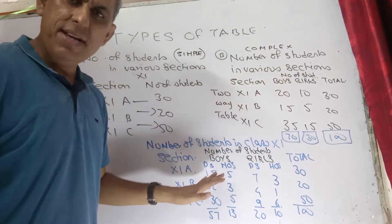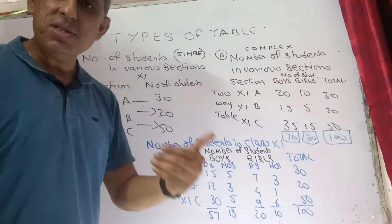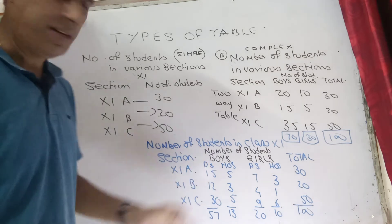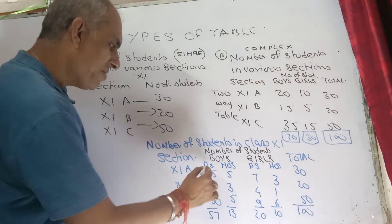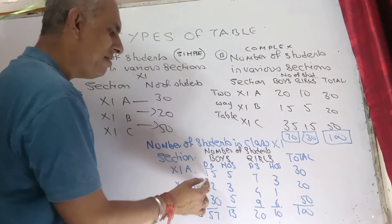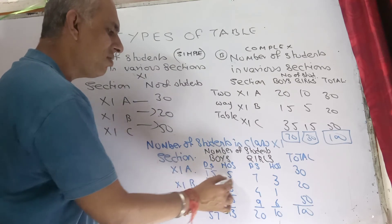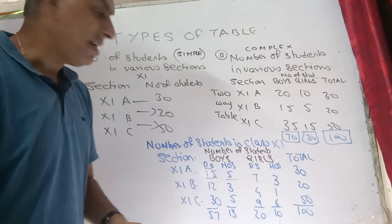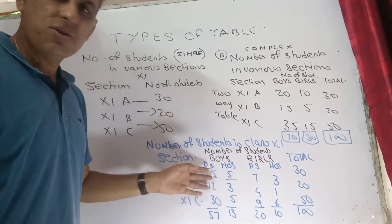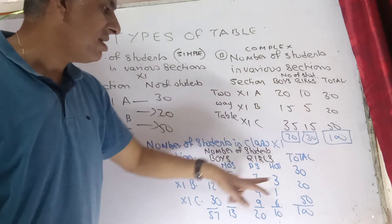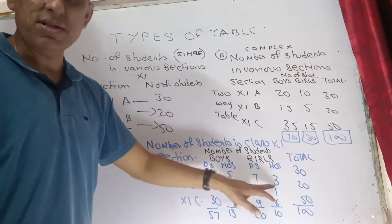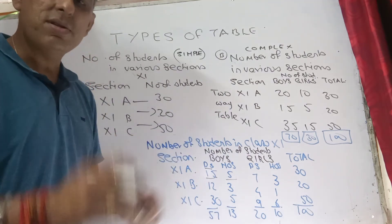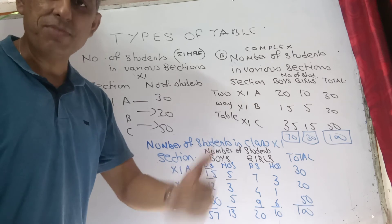We can show boys divided into how many are day scholars and how many are in the hostel. So the 20 boys can be further divided into 15 day scholars and 5 hostel students — the information divided even further. Similarly, for the girls: 10 girls, 7 day scholars, and 3 hostel students. This table is even more descriptive, giving a better range of information.